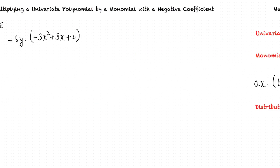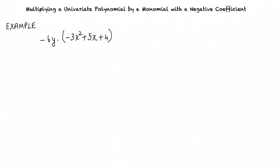Let us consider an example. Let us say we have to simplify negative 6y times negative 3x square plus 5x plus 4. Negative 3x square plus 5x plus 4 is a univariate polynomial and negative 6y is the monomial with negative coefficient. We would now use the distributive property to multiply negative 3x square plus 5x plus 4 by negative 6y.